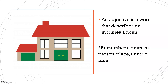If we describe or modify these nouns, then those words would be adjectives. So the roof — what color is it? It's red. So if I say 'a red roof,' then I'm using an adjective and a noun.